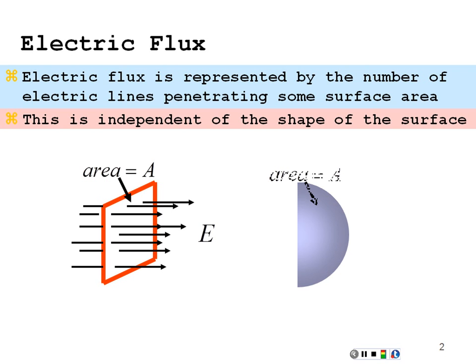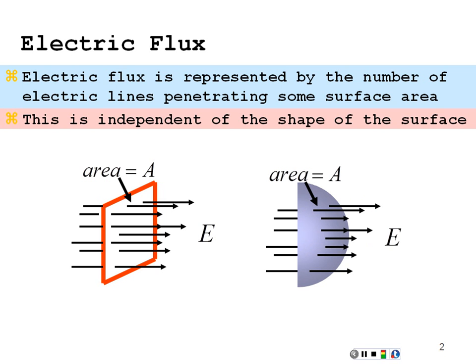This would be independent of the shape of the surface itself. Say if I had a curved area like a hemisphere, but if I had the same field going through that surface, I would have the same flux. In other words, the flux is how many field lines are actually going through a given surface area. It wouldn't matter whether it was a square plane or a curved area — if I had the same number of field lines going through, I have the same flux.